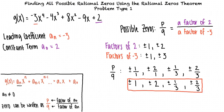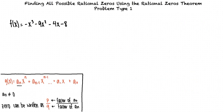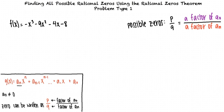Why don't we try another example? Given the polynomial f of x equals negative x cubed minus 9x squared minus 4x minus 8, we want to find all possible rational zeros of the function using the Rational Zeros Theorem. A sub n is the leading coefficient, so a sub n equals negative 1. A sub 0 is the constant term, so a sub 0 equals negative 8.